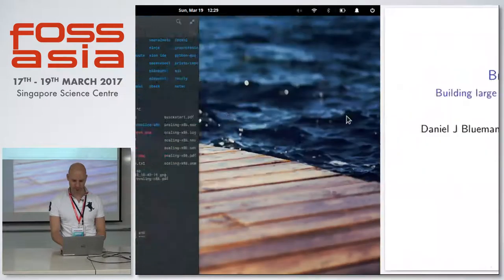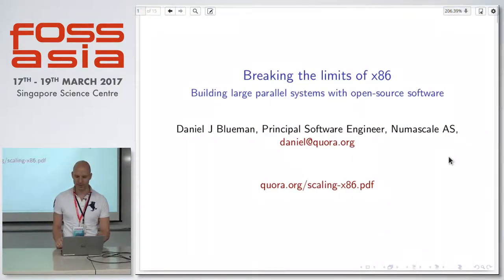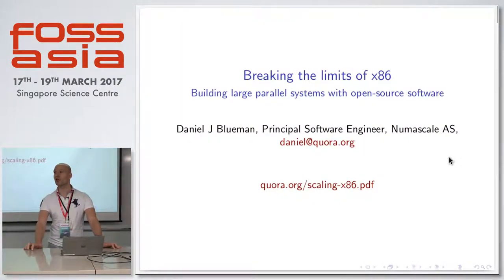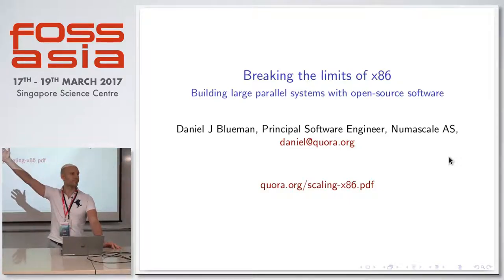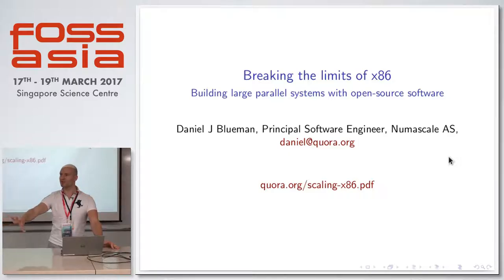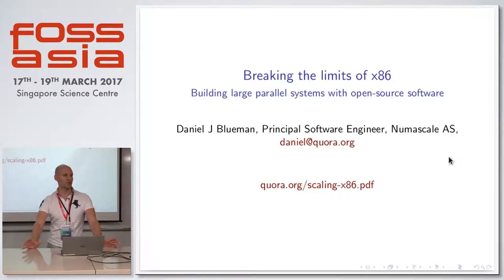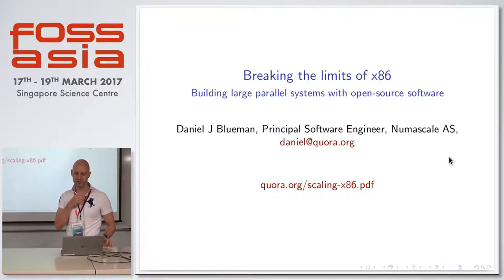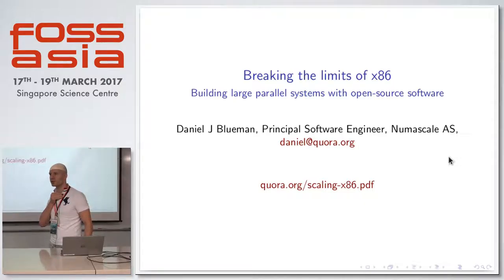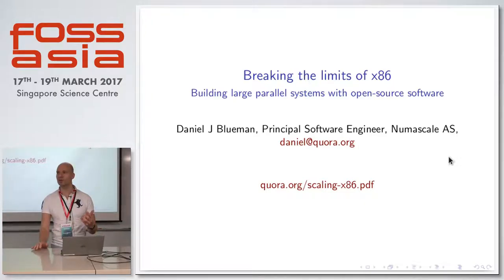How many people have used more than eight cores in their system? Hands up. So everyone's used eight-core servers or workstations or eight threads. Just eight? My talk is about how you actually break that limit and how you actually have more cores than a single server.